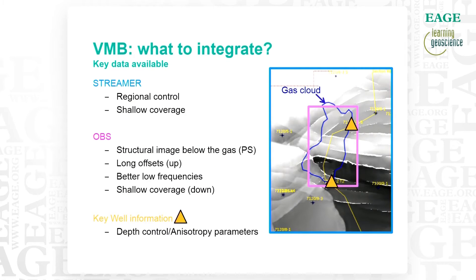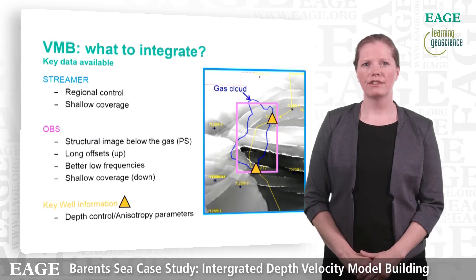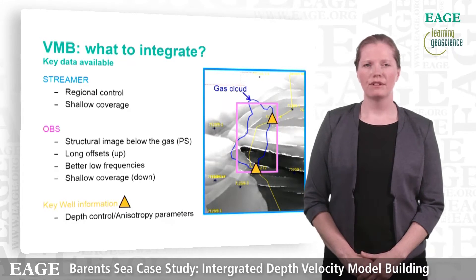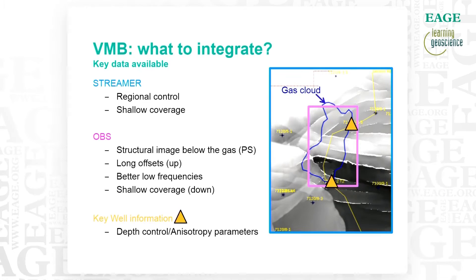For this project we had several datasets available. First of all we had the vintage streamer data that provided regional control and shallow coverage. And then we had the new 3D OBS, which we used for a structural image below the gas. We had long offsets and better low frequencies. In addition it is possible to use the downgoing data for shallow coverage. We also have two key wells just outside the gas area.